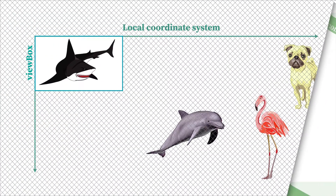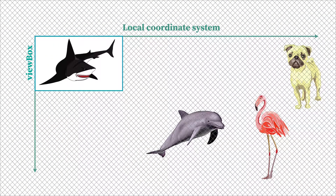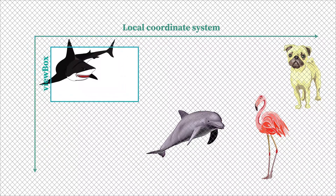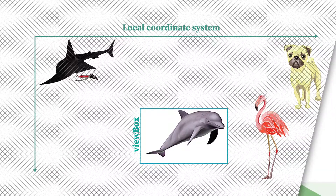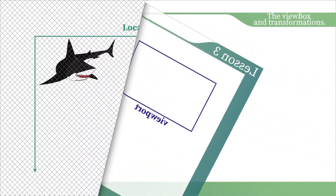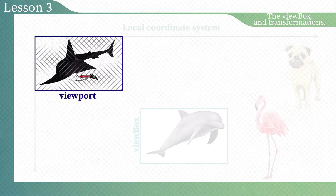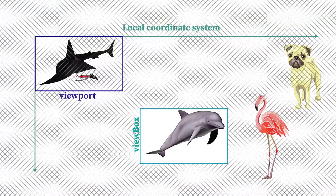The dolphin was outside the viewbox boundaries, and therefore it was invisible. After we changed the values of the min-x and min-y parameters, the viewbox shifted to the left. We can consider this shift as applying a transform translate function to the viewbox. We can look at the min-x and min-y values as the parameters of the translate function.